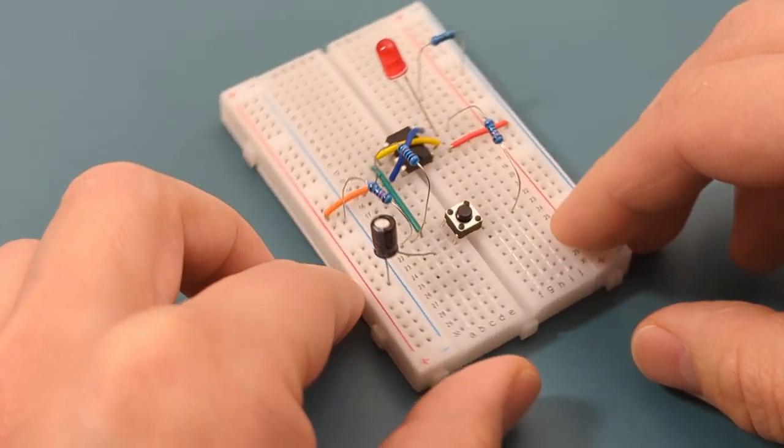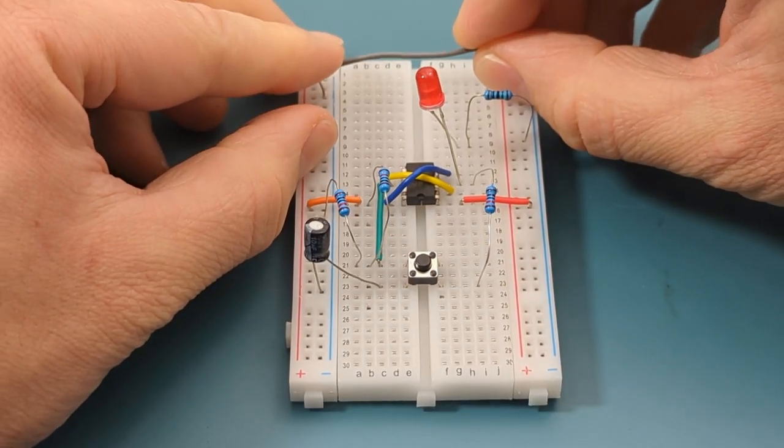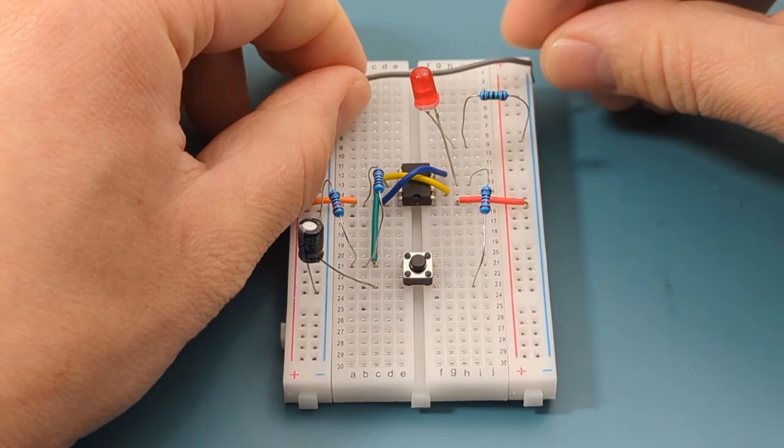Turn the breadboard to the vertical position again. Both negative terminals on the power rails are used. Connect the negative rails with a jumper wire.